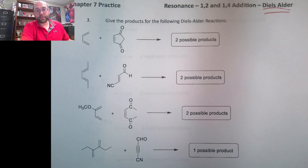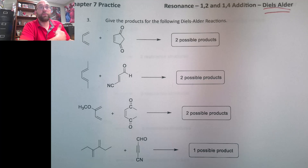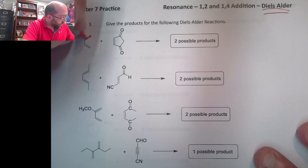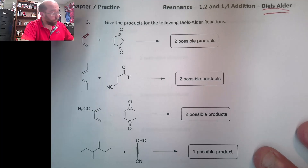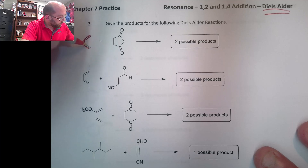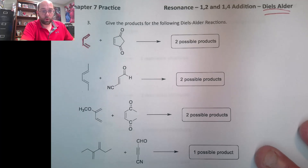In getting started with these, they are pretty much like a 1-4 addition, but they're what we call a 1-4 cycloaddition. You're always looking for — just like we did with the 1-2/1-4 — look for the double bond, the single bond, the double bond. That's what you want to look for.